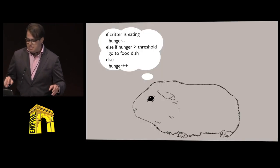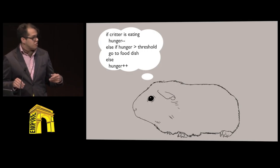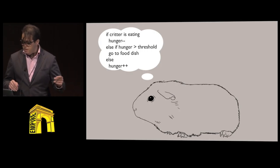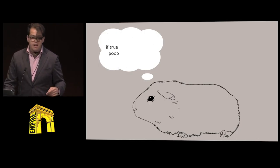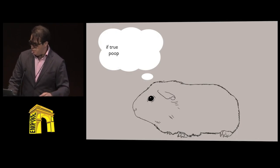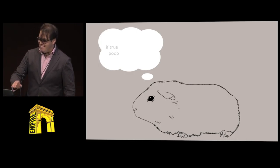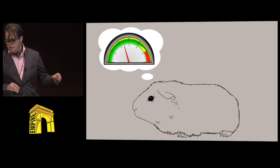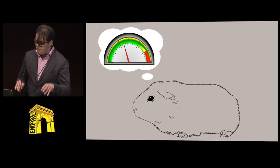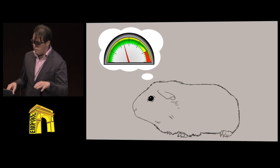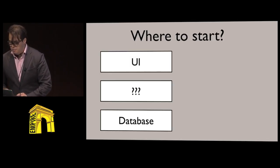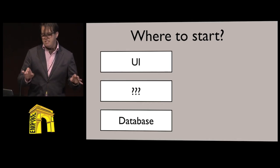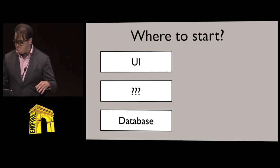The critters have relatively simple behaviors and feedback loops. When they cross the hunger threshold, they go to the food dish. They also poop constantly, which the user needs to clean up. Happy and well-fed critters are going to be friendly to you and to each other, and the agitated and hungry ones will get aggressive and eventually leave the village. Now that I've got my ideas out there, I think I'm ready to start actually speccing this out.